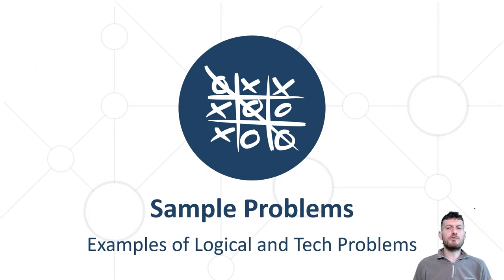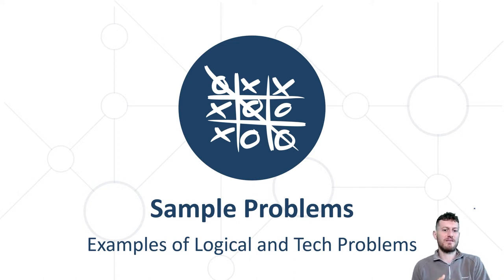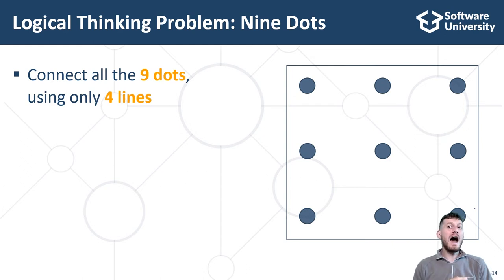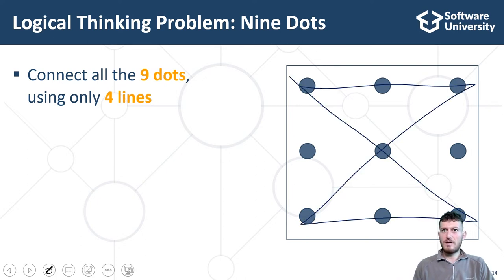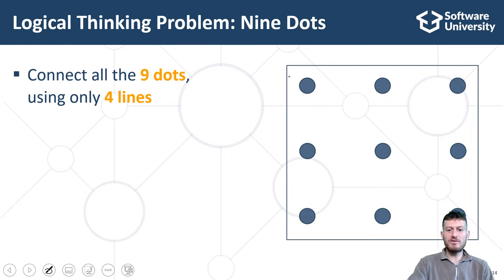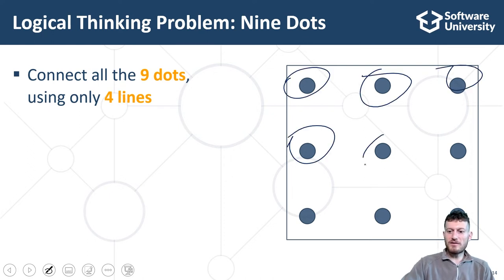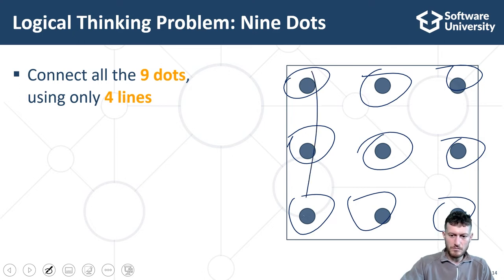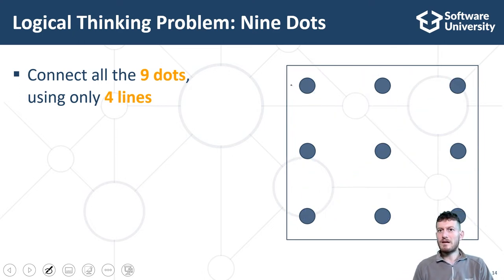Now we shall illustrate problem solving and logical thinking by a few examples, considering several logical and several technical problems. Let's start with a classical logical thinking problem: how to connect nine dots using only four lines? At the figure we can see nine dots staying at a grid three by three. We want to connect these nine dots using only four straight lines, not more.